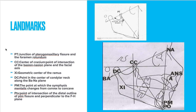In Ricketts analysis there are special, very characteristic landmarks. The PT point is one of them. The PT point is the junction of the pterygomaxillary fissure and the foramen rotundum — specifically the superior and posterior point of the pterygomaxillary fissure where its lower border meets the foramen rotundum.